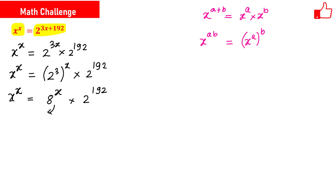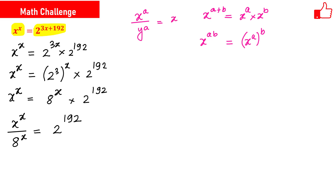Taking the 8 raised to the power x term to the left-hand side gives x raised to the power x divided by 8 raised to the power x equals 2 raised to the power 192. Using the rule that x raised to the power a divided by y raised to the power a equals x over y raised to the power a, we can write this as x over 8, raised to the power x, equals 2 raised to the power 192.